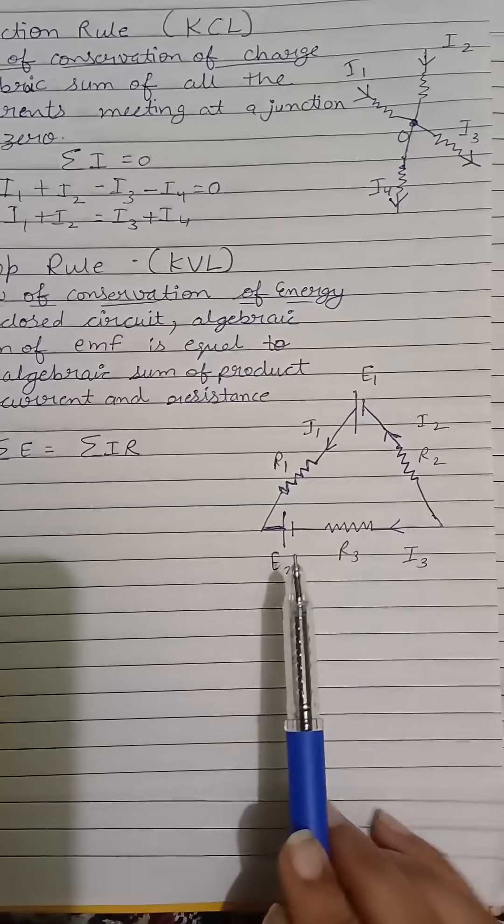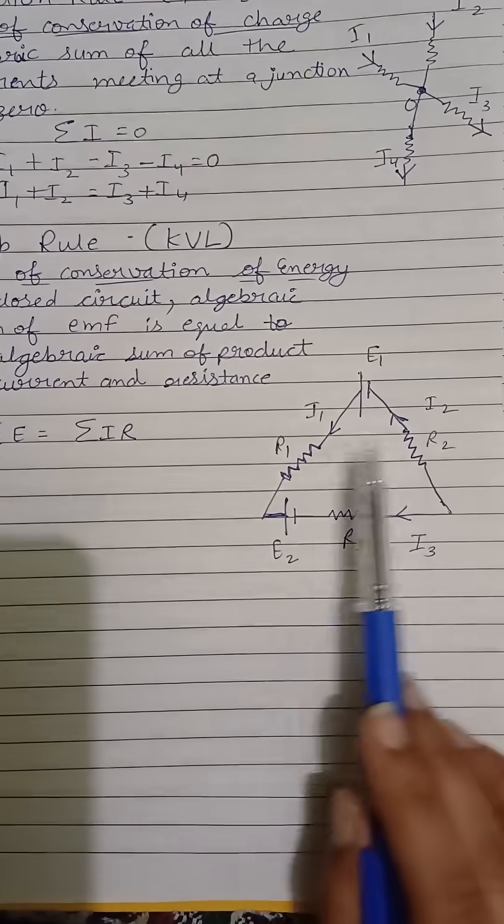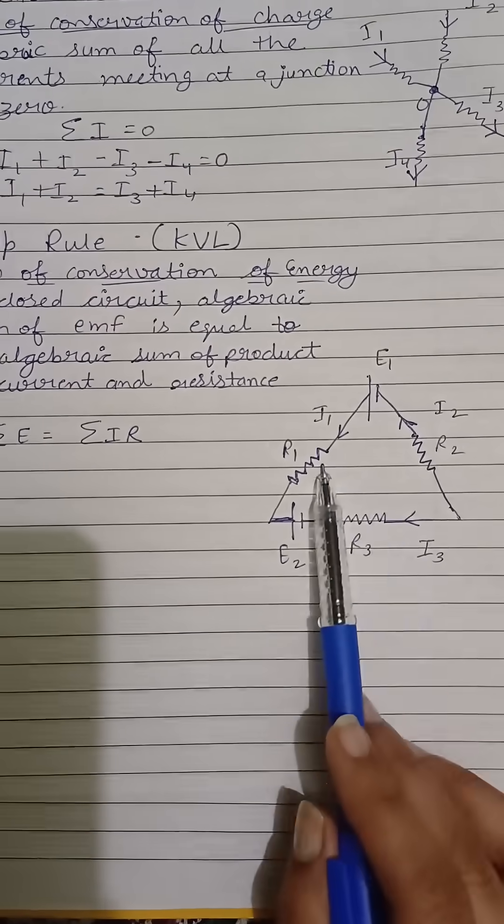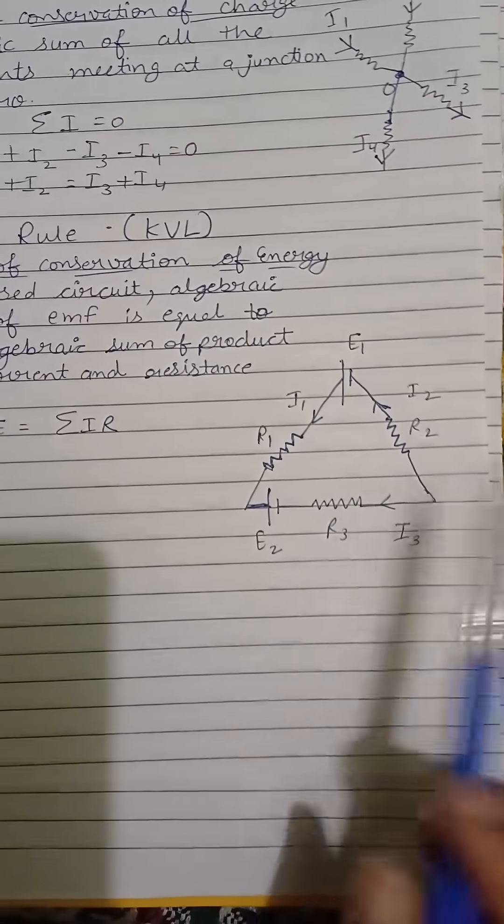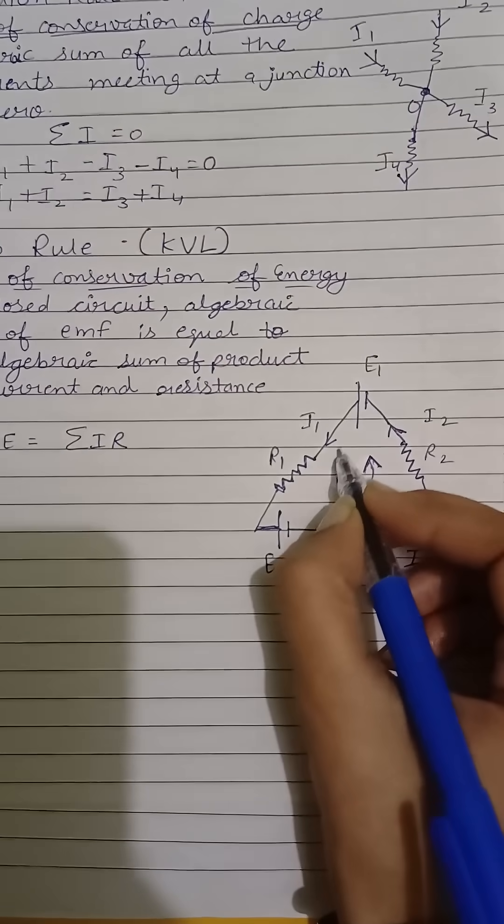Here we have two EMFs E1 and E2, resistances R1, R2, and R3, and currents I1, I2, and I3. We will consider the direction of current in this loop.